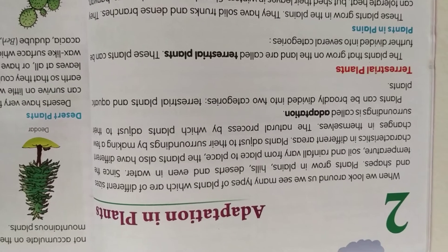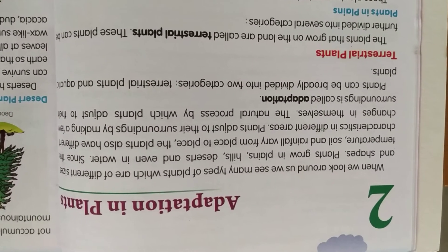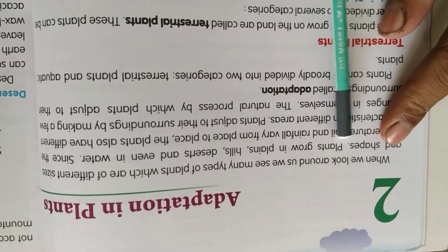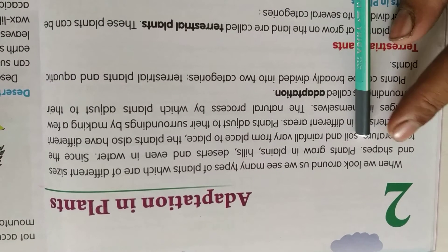Adaptation in plants. Adaptation means anukulan — to adjust according to nature, to adjust yourself according to climate and temperature. When we look around us, we see many types of plants which are of different size and shape.